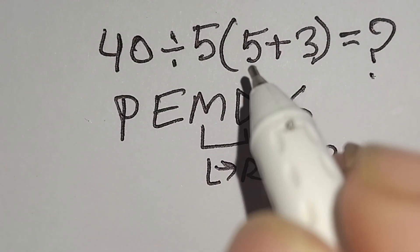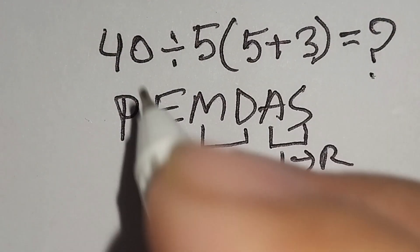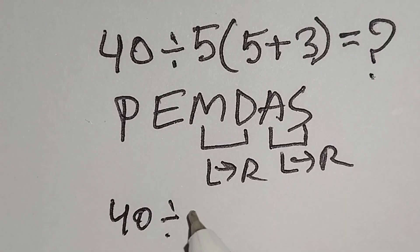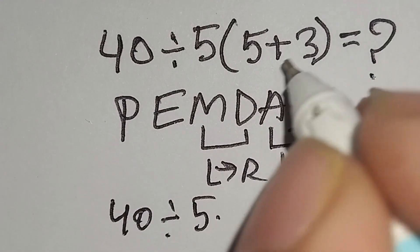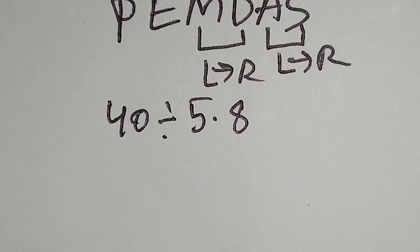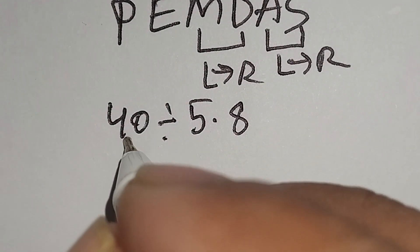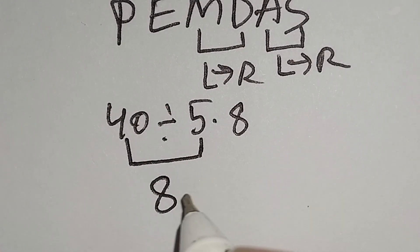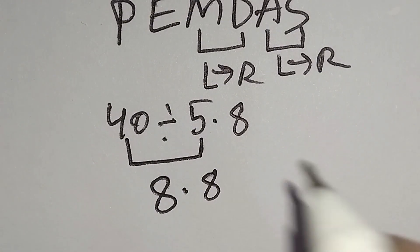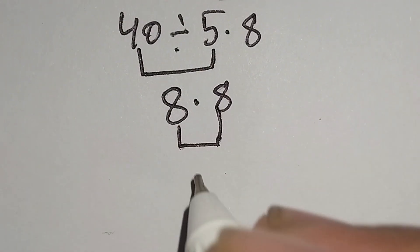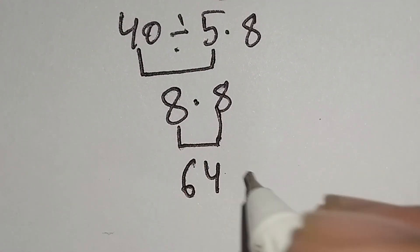Now I have to work with this parenthesis first. Here, 40 divided by 5 times this 5 plus 3 gives us 8. Now I have to work with division. Here, 40 divided by 5 gives us 8 times this 8. 8 times 8 gives us 64, and this is correct.